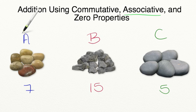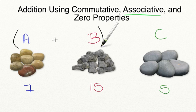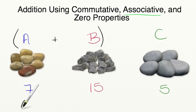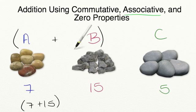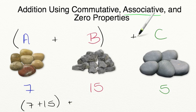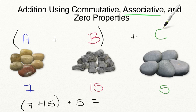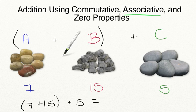Let's start by grouping together the pile of yellow rocks with the pile of gray rocks into one big pile. We write that as (7 plus 15) in parentheses to show they're in one pile, plus our five rocks in a separate pile. The associative property says this has an equal value whether we group these rocks in one pile or group them together in a different arrangement.